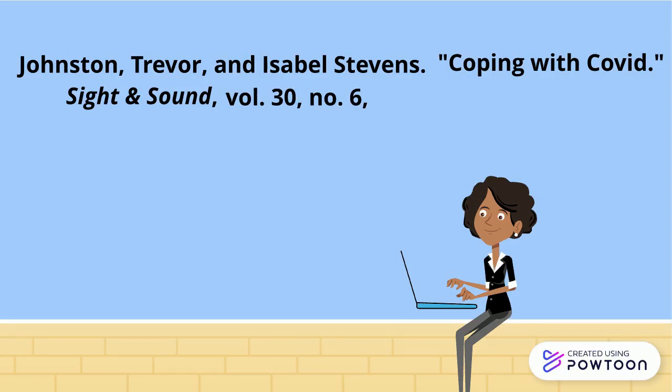Next, include the publication date. Depending on the type of source, this might include a year, a year and a month, or a day, month, and year. After the publication date, add a comma and then the page range for the article. For articles that span a range of pages, include pp. before the page range. For articles on just one page, use a single letter p., followed by the page number, followed by a period.